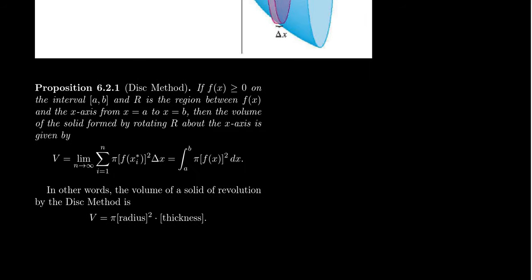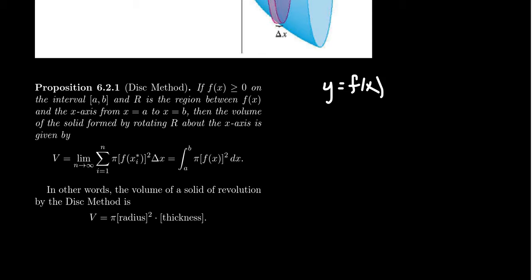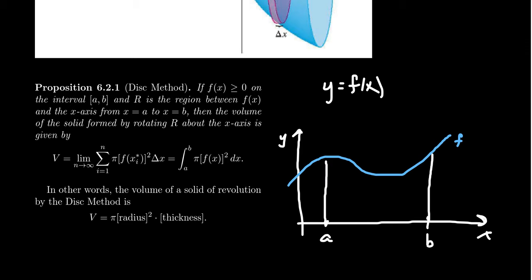Suppose we have some function y equals f(x). Here's our x-axis, here's the y-axis, and maybe f looks something like the following. We're going to pick two numbers in the domain, the one on the left we'll call a, and the one on the right we'll call b. The function f, the x-axis, and the lines x equals a and x equals b form a region in the plane, bounded between f, the x-axis, a, and b.